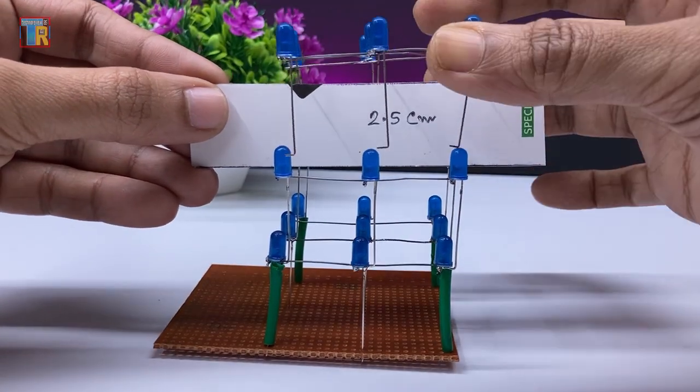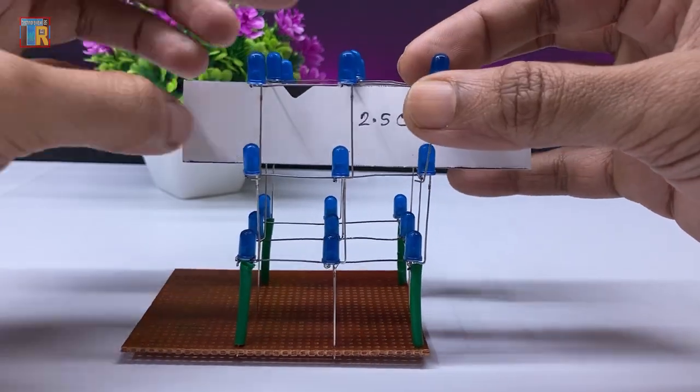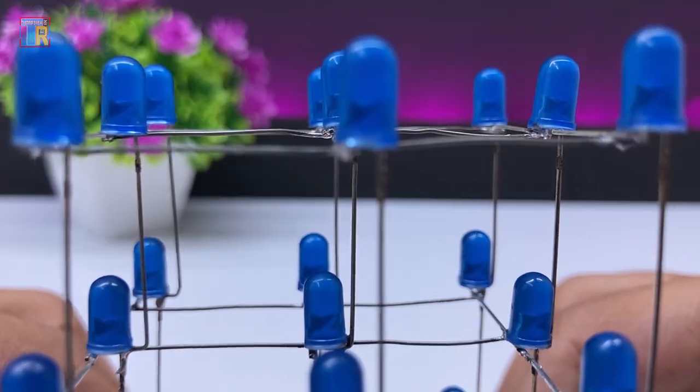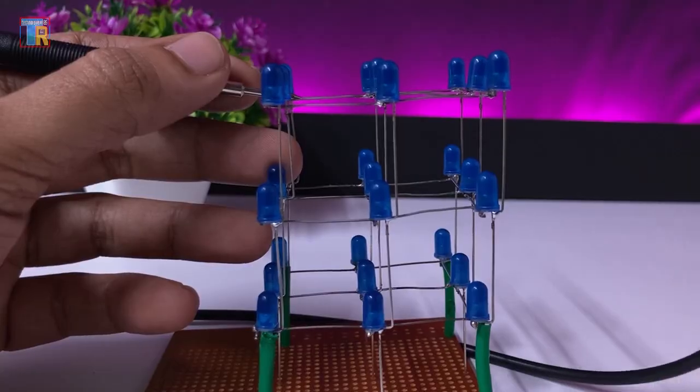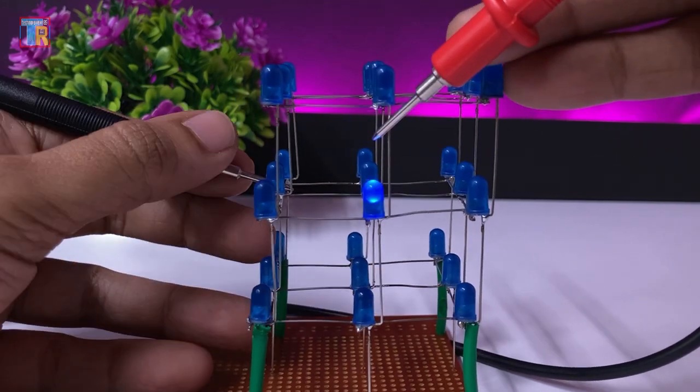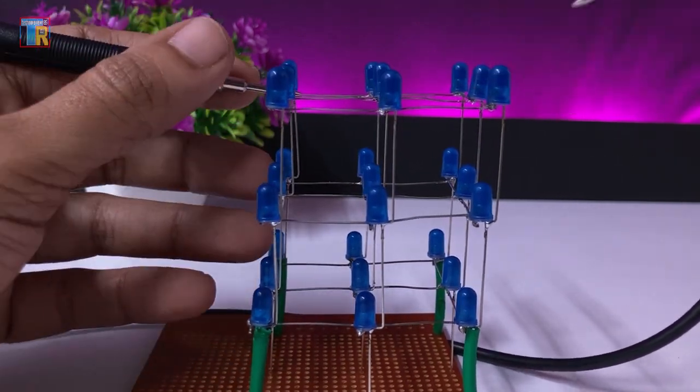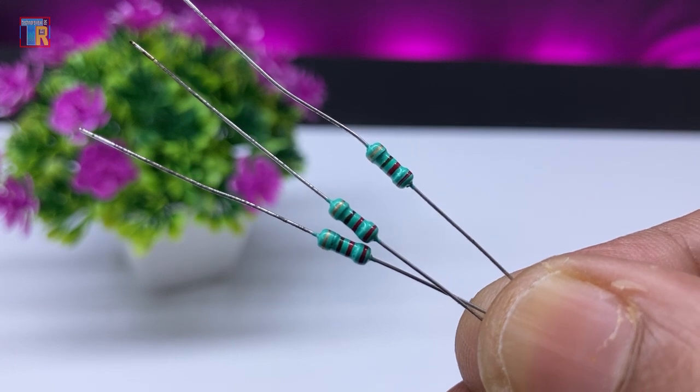I will do the same process for the third layer. I am testing my connections and LED polarity because sometimes we make mistakes in wiring. You need three 220 ohms resistors.